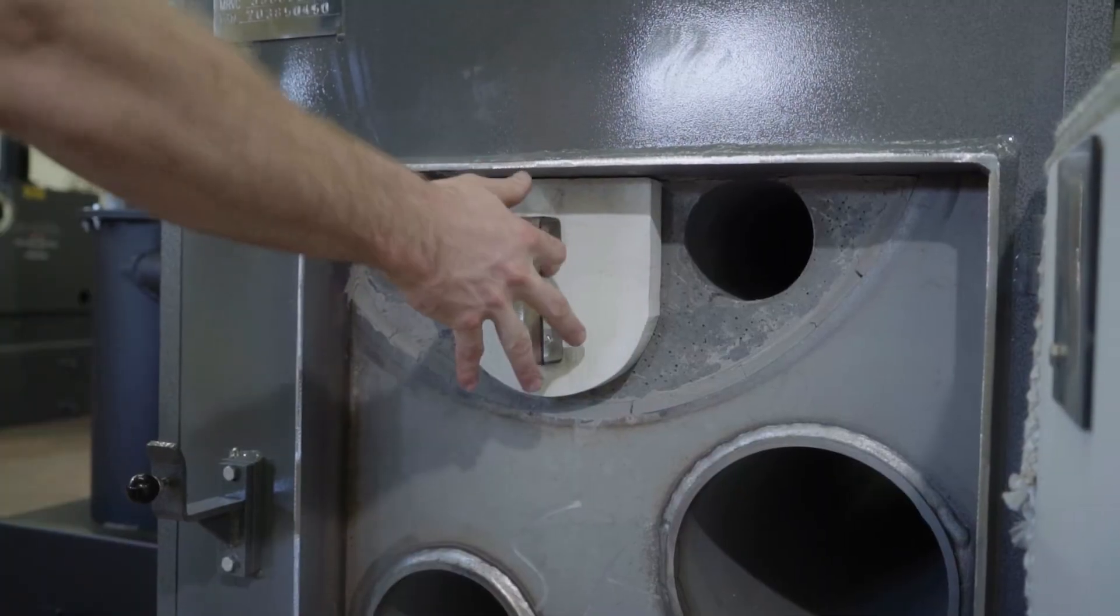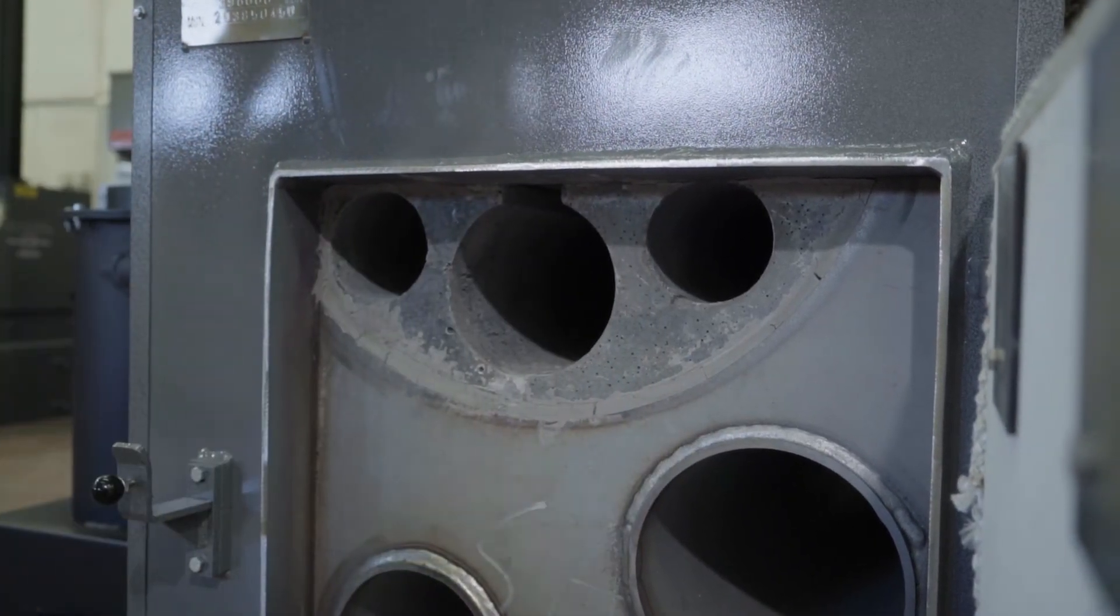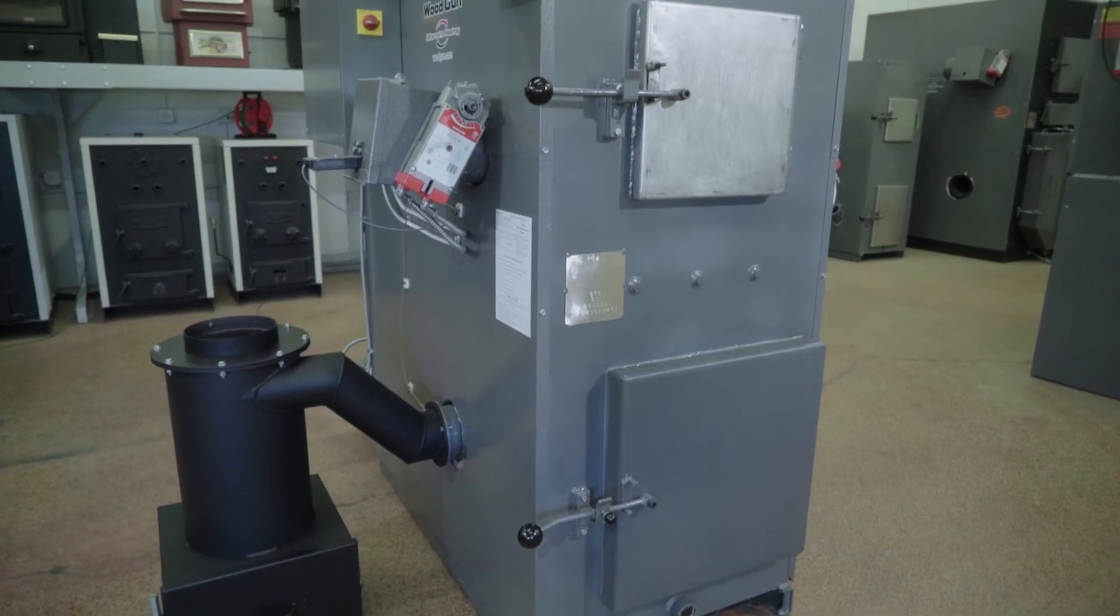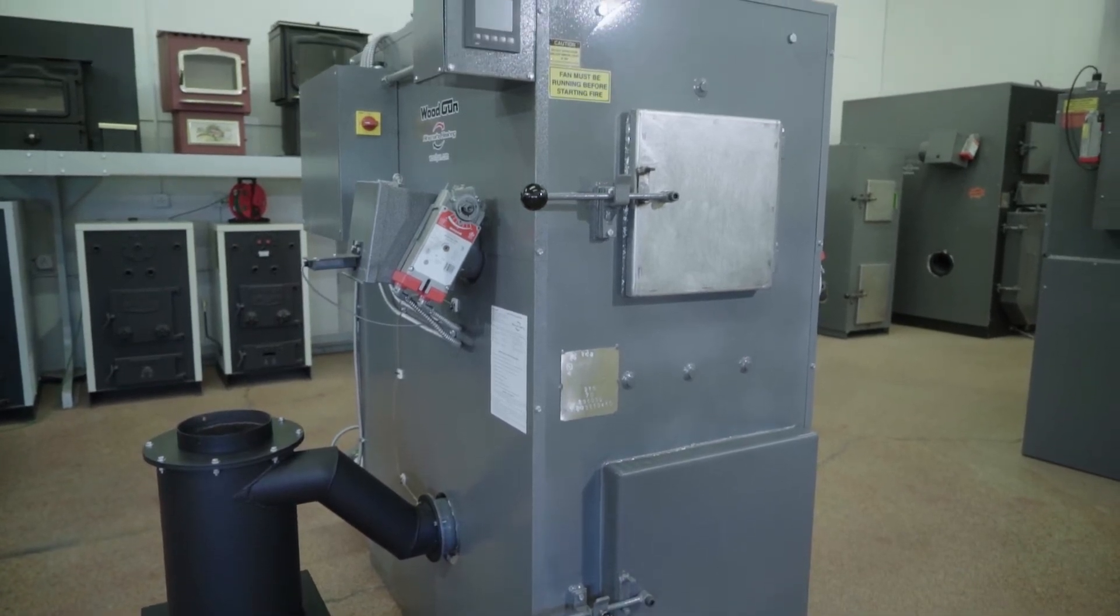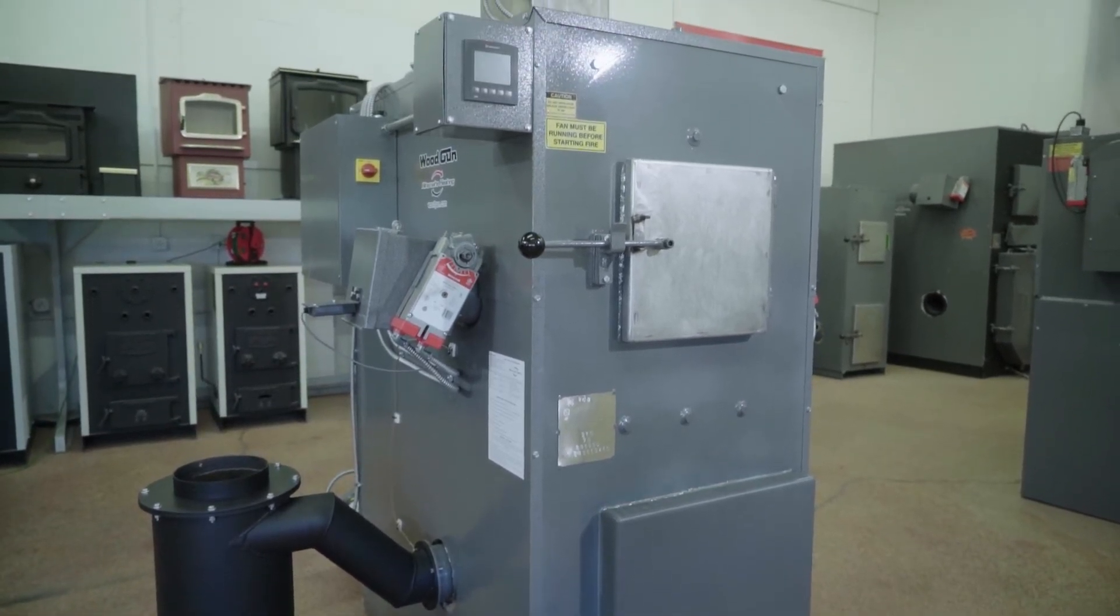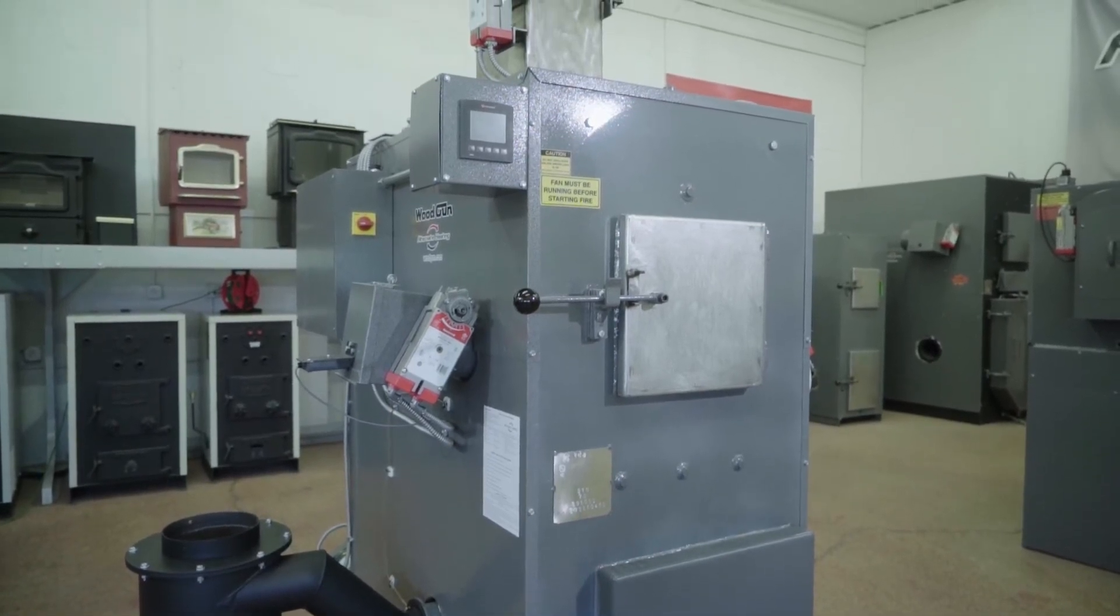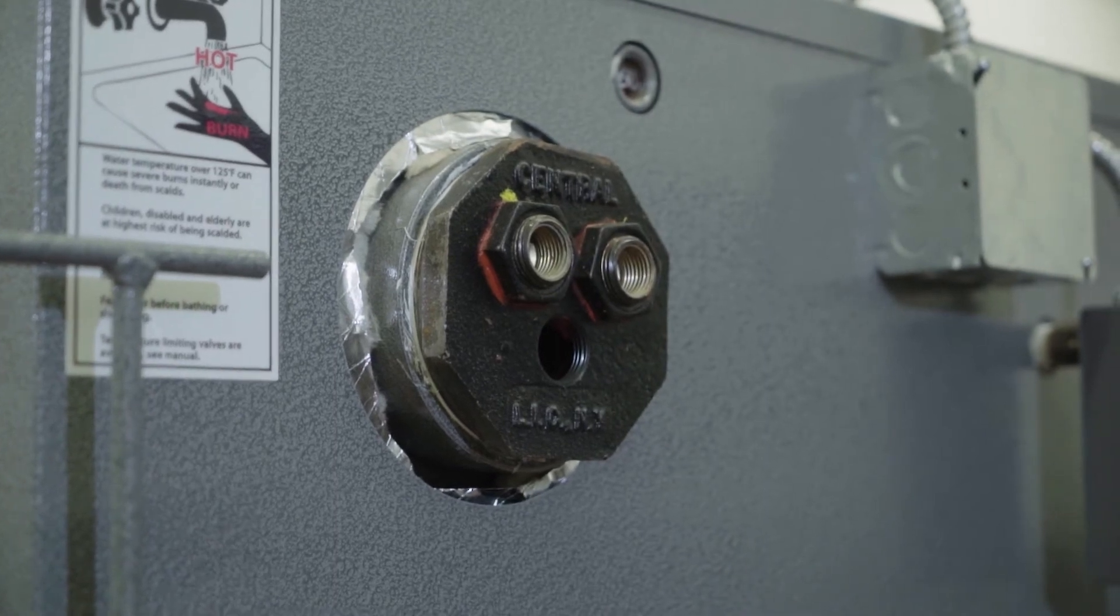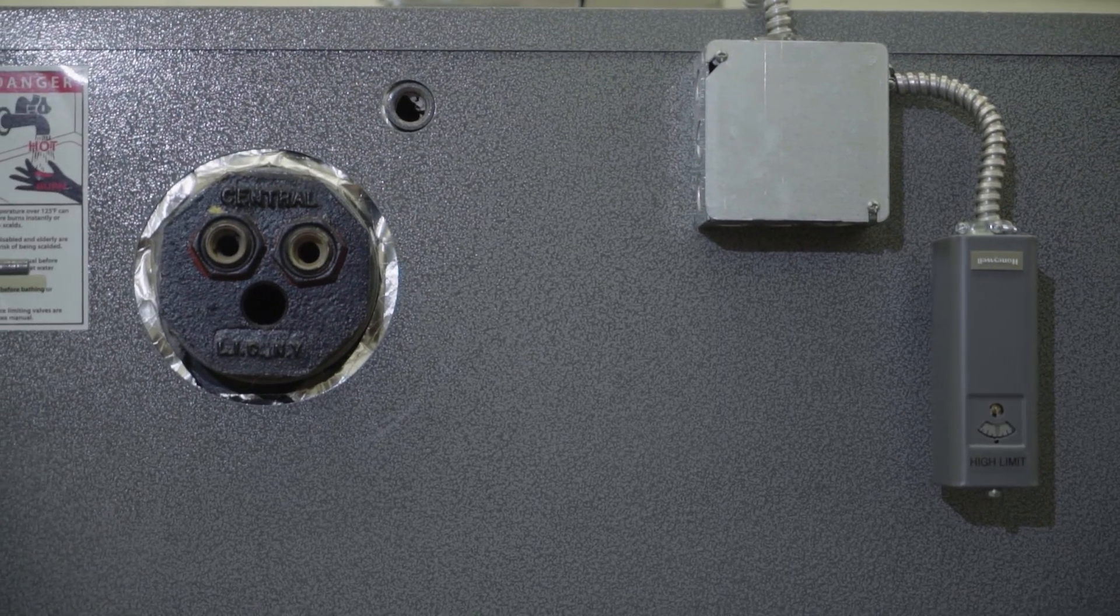On every Wood Gun, there are options that can be added to better serve your needs. This E250 has the particle fuel feed. It also has the liquid fuel backup, which simply means you can burn fuel oil, propane, or natural gas in place of wood if you desire. You can also add a domestic hot water coil, heat your pool, and there's also a low-temperature shutdown feature available. Each Wood Gun is available as a steam unit.